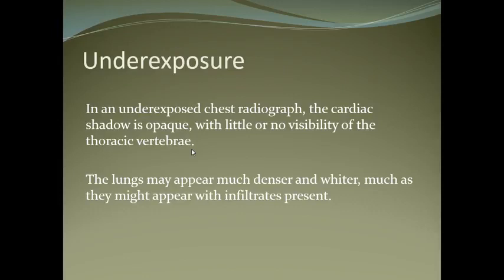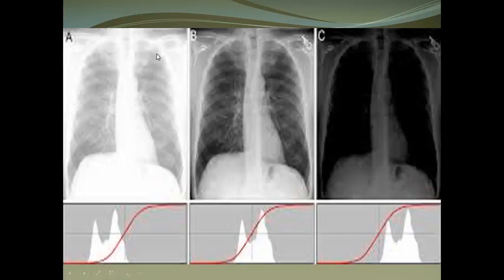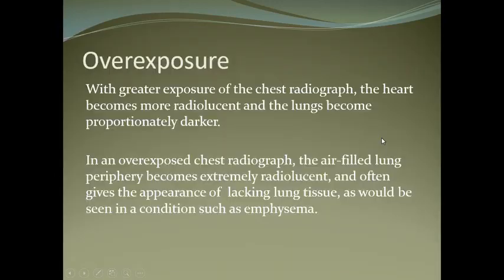In an under-exposed chest radiograph, the cardiac shadow is opaque and the thoracic vertebrae are not visible. The lungs may appear much denser and whiter and might be misinterpreted as infiltrates. You can see: this is the normal chest X-ray, this is under-exposed, and this is over-exposed.